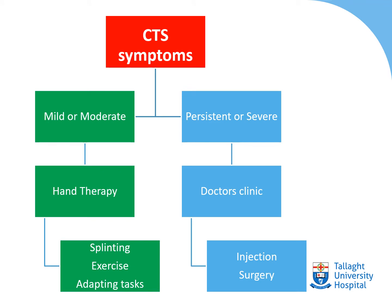When you have carpal tunnel syndrome, there are a few different things that may have to happen. Generally, if your symptoms are pretty new and mild to moderate, you'll be sent for hand therapy within the occupational therapy department, where we'll talk to you about managing your symptoms, splinting, exercise, and adapting your tasks. If that doesn't improve your symptoms — if they're persistent or quite severe — then you'll be seen at the doctor's clinic, where they may discuss the suitability of injection or surgery for your carpal tunnel.